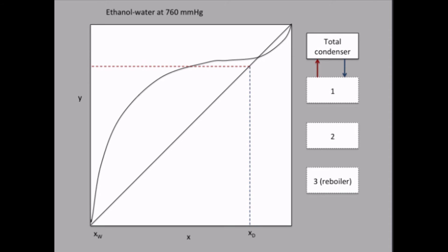That's the composition. Now, what is the composition of the liquid falling down from this equilibrium stage? Well, that flow must be in equilibrium with this flow — so a condensing gas must be in equilibrium with this boiling liquid,